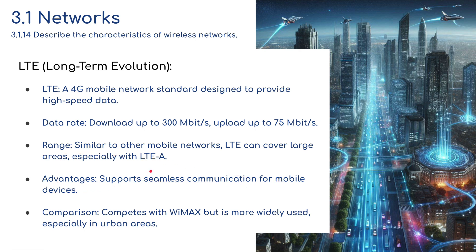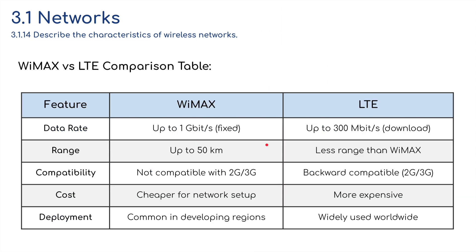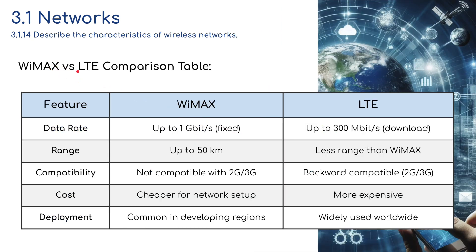LTE supports seamless communication for mobile devices and competes with WiMAX but is more widely used, especially in urban areas. In a comparison: WiMAX offers up to 1 gigabit per second and a 50-kilometer range, while LTE offers 300 megabits per second over a smaller range. WiMAX is not backward compatible, whereas LTE is backward compatible with 2G and 3G. WiMAX is cheaper to set up and more common in developing regions; LTE is more expensive but used worldwide.